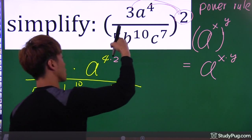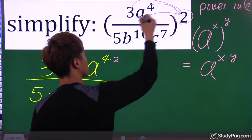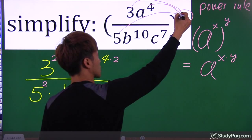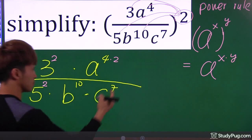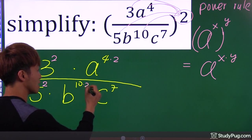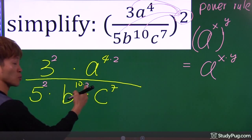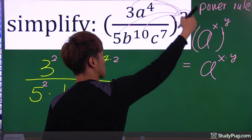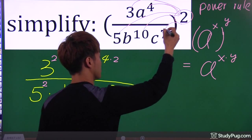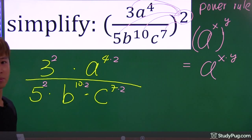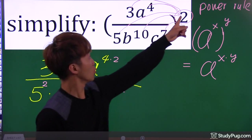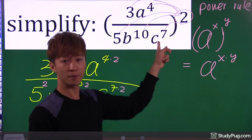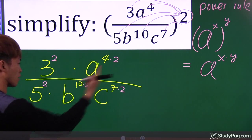Now we're ready to bring the exponent to the bottom. So let's bring the exponent to the 5. And let's bring the exponent 2 to b to the power of 10. Exponent, exponent — we put them together. Same as this. So bring the exponent 2 to the last guy right here. We brought the exponent 2 to everybody.